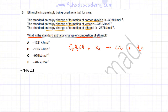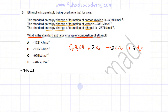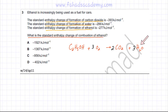Balancing the combustion equation: there are two CO2 molecules and three H2O molecules. Totalling the oxygens on the right-hand side gives four plus three, which is seven oxygens. There is already one oxygen in ethanol, so there are three O2 molecules needed. So one mole of ethanol completely burns in excess oxygen to produce carbon dioxide and water.